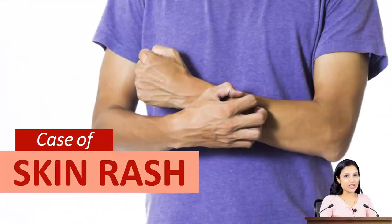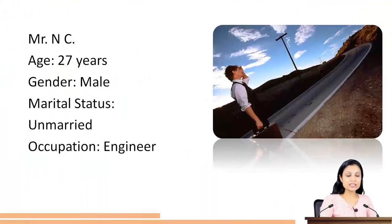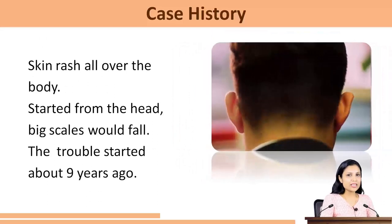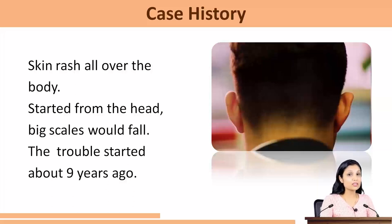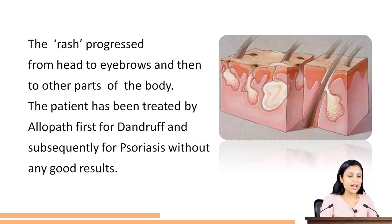This is a case of skin rash. Mr. N.C., who is 27 years of age, an unmarried engineer, complains of skin rash all over the body. The rash started from the head and there would be big scales which would fall. This began about 9 years ago. The rash progressed from head to eyebrows and then to other parts of the body. The patient had been treated by allopathic medicine first for dandruff and subsequently for psoriasis without any good results.